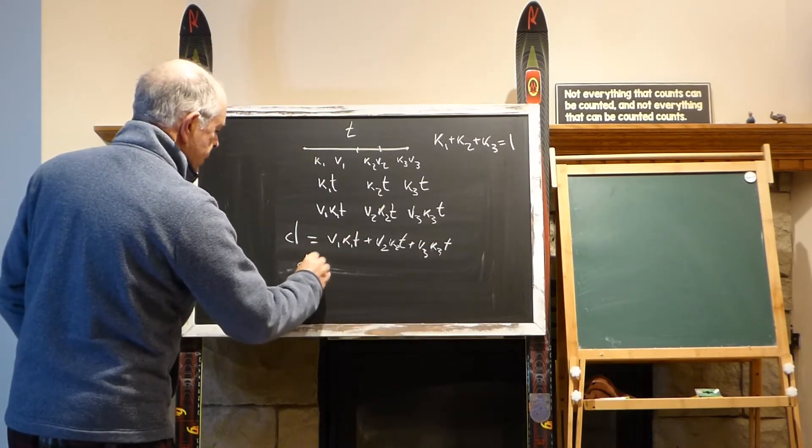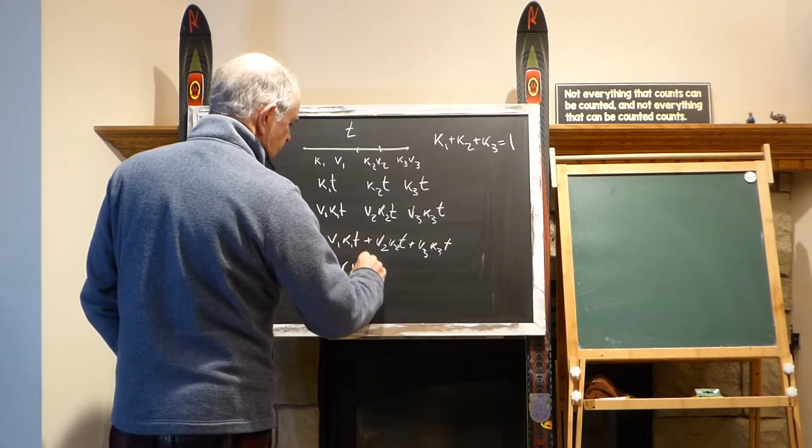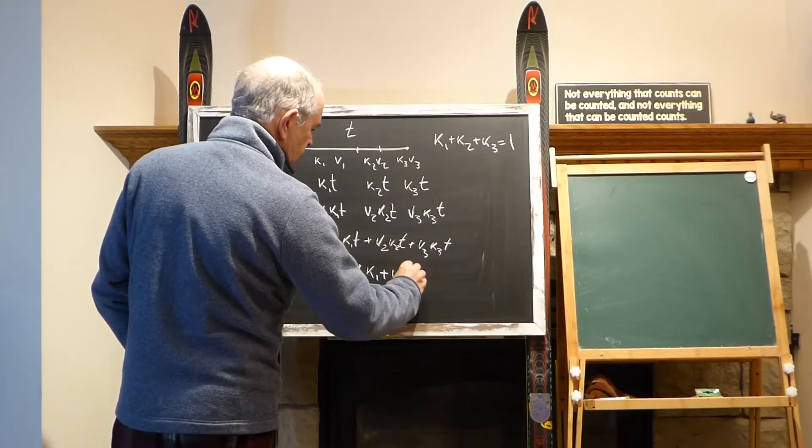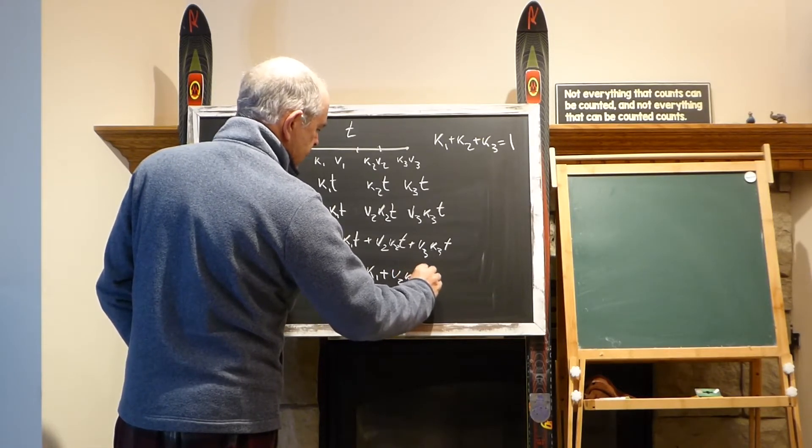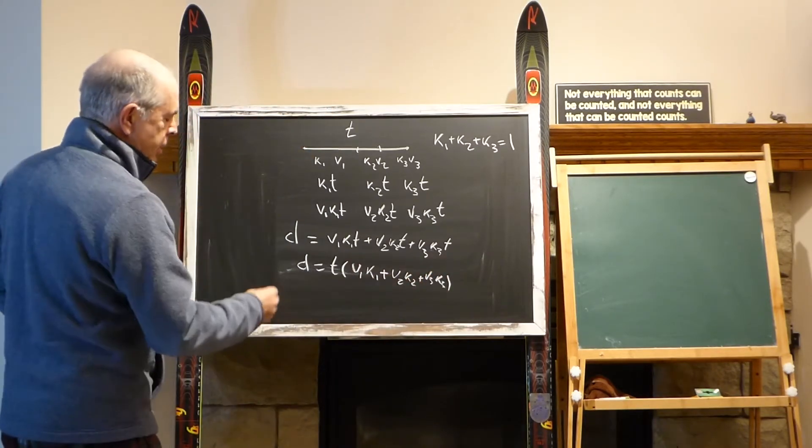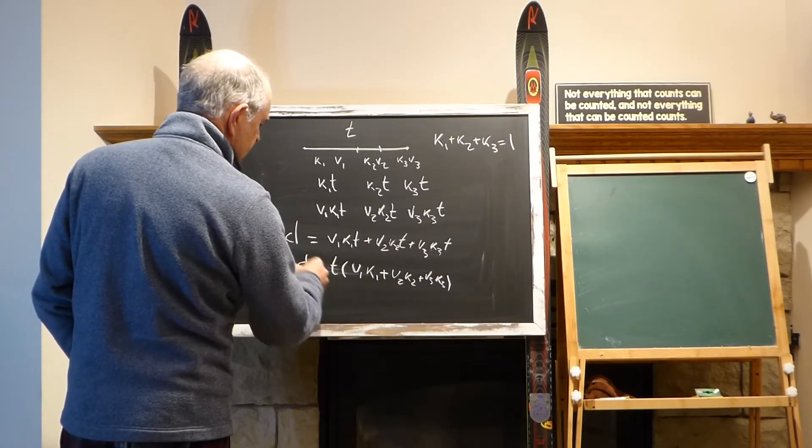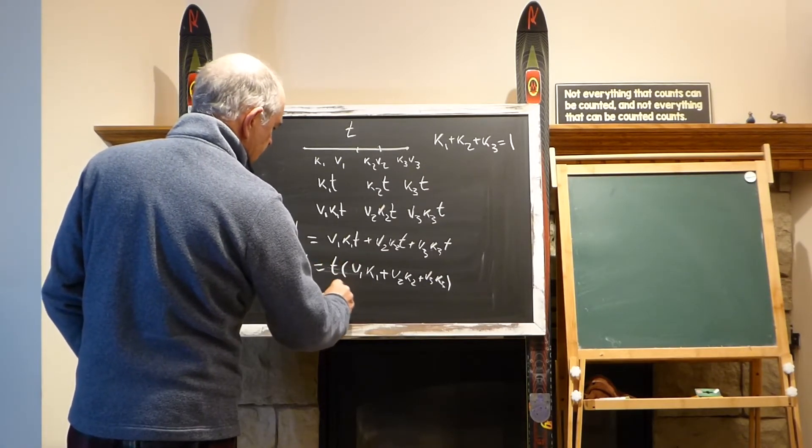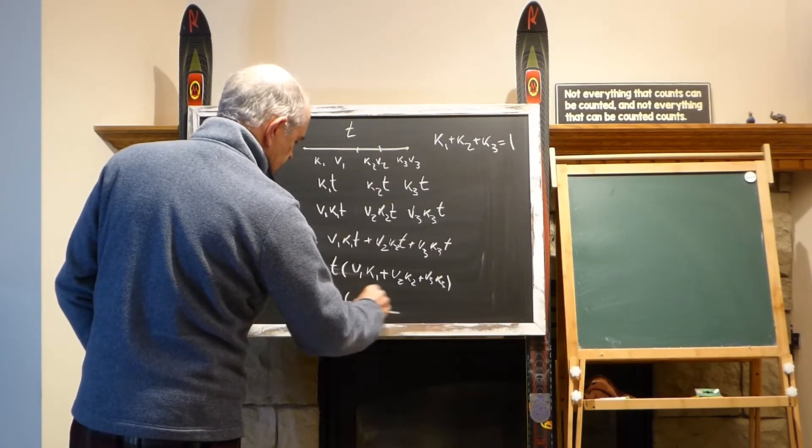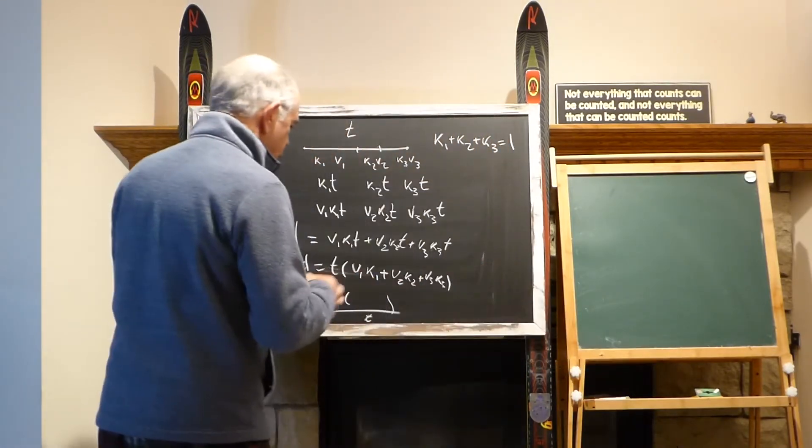v3*k3*t, and I can simplify because I can factor t out, and then I can say v1*k1 plus v2*k2 plus v3*k3, and basically this is another speed.